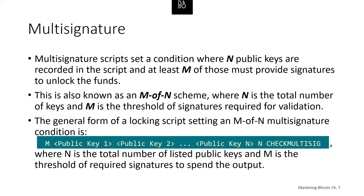Standard multi-signature scripts are limited to at most three listed public keys, meaning you can do anything from 1-of-1 to a 3-of-3 multi-signature. This limitation may be lifted at some point, so you should check the isStandard function to see what's currently accepted by the network. The limit of three keys applies only to standard multi-signature scripts, not to multi-signature scripts wrapped in a pay-to-script hash script. P2SH multi-signature scripts are currently limited to 15 keys, allowing up to 15-of-15 multi-signature.